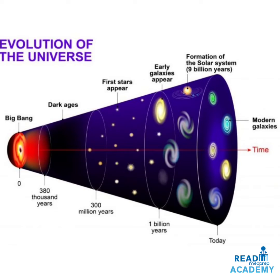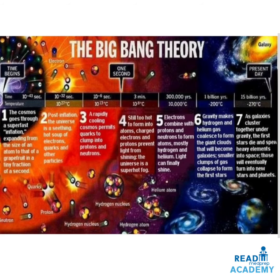Here you can see the big bang theory and the evolution of the universe. The big bang resulted in dark ages between 380,000 years to 300 million years. Between 300 million to 1 billion years, the first stars appeared. Later, between 1 billion years slowly till today, the formation of the solar system occurred, taking about 9 billion years, and modern galaxies were formed.